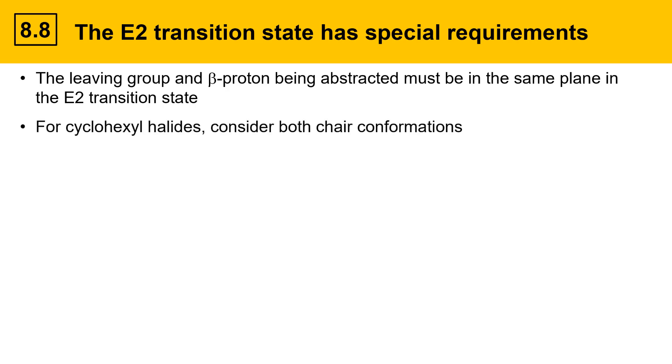For cyclohexyl halides, you need to consider both chair conformations. Here's an example: chlorocyclohexane has an alpha position, and then there are two beta positions within the ring.